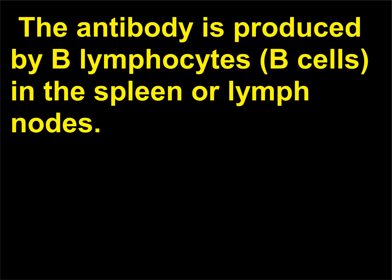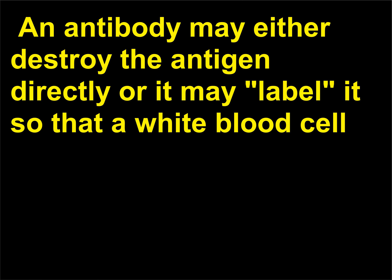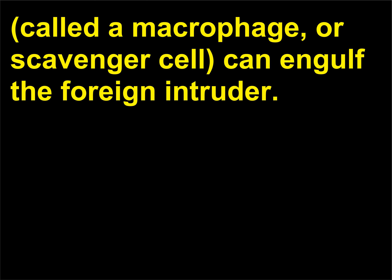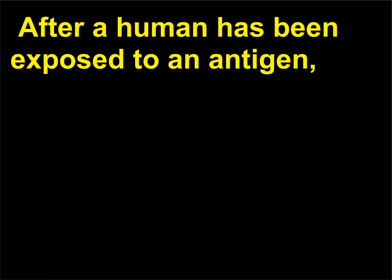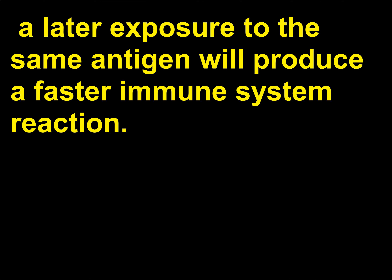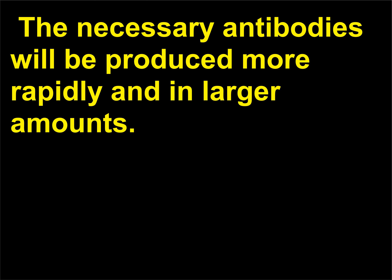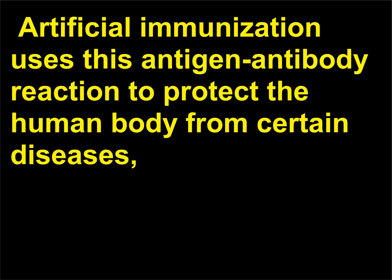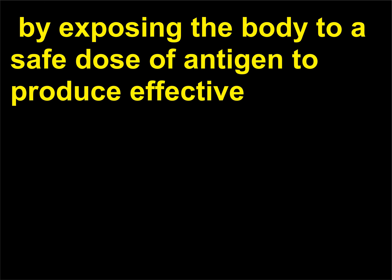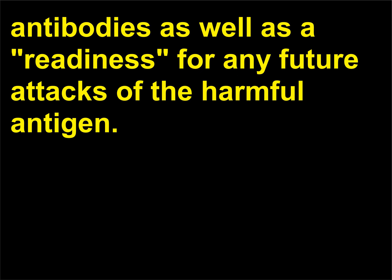The antibody is produced by B lymphocytes (B cells) in the spleen or lymph nodes. An antibody may either destroy the antigen directly or it may label it so that a white blood cell called a macrophage, or scavenger cell, can engulf the foreign intruder. After a human has been exposed to an antigen, a later exposure to the same antigen will produce a faster immune system reaction — the necessary antibodies will be produced more rapidly and in larger amounts. Artificial immunization uses this antigen-antibody reaction to protect the human body from certain diseases by exposing the body to a safe dose of antigen to produce effective antibodies and readiness for any future attacks.